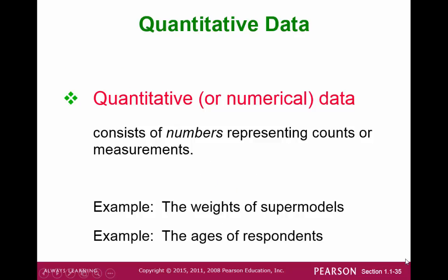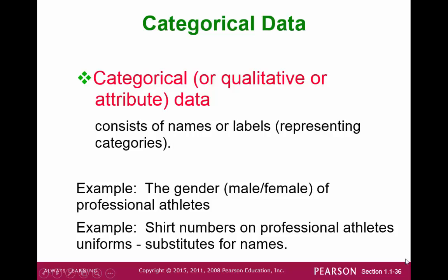A quantitative dataset is a collection of numerical values — a set consisting of numbers representing counts or measurements. In contrast, a categorical dataset would consist of names or labels that are not numerical, for example, gender or the shirt number on an athlete's uniform.